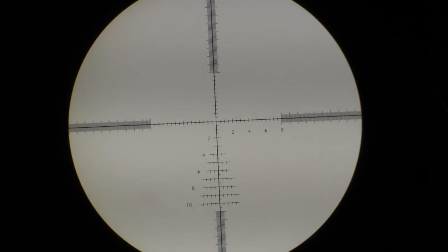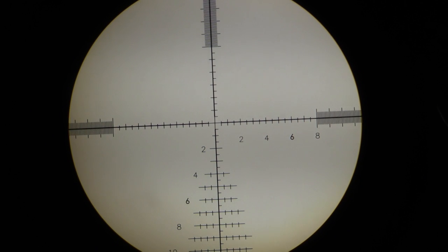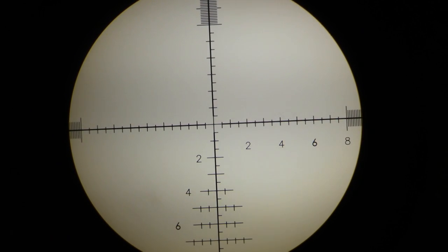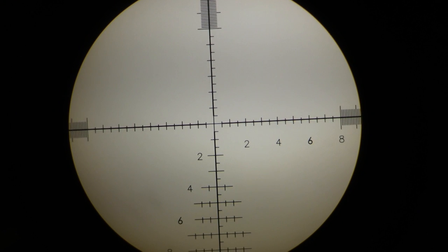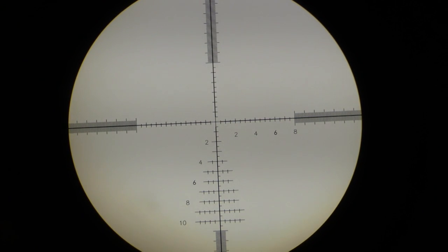What is first focal plane? Reticle placement within the erector tube determines if the rifle scope is either first or second focal plane. The erector assembly is a critical assembly within the rifle scope and is responsible for magnifying or demagnifying the image.